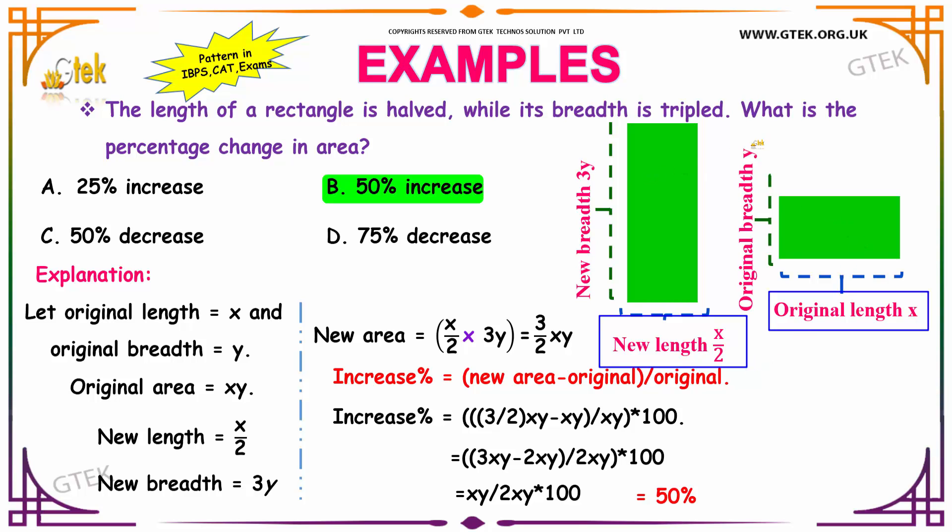It is given that the breadth is tripled. Let us assume the breadth of a rectangle to be y. The breadth is tripled, so your new breadth will be 3 times y.